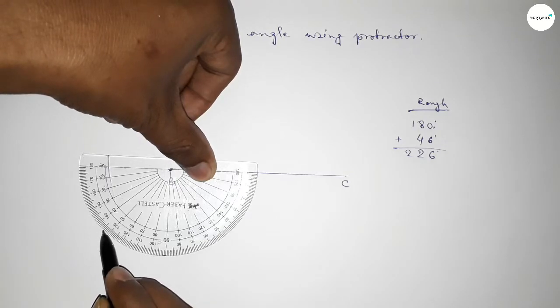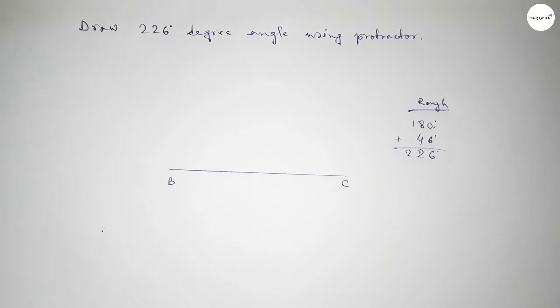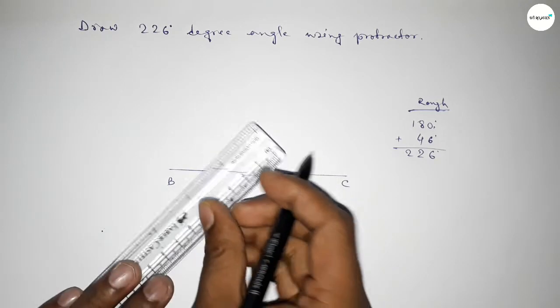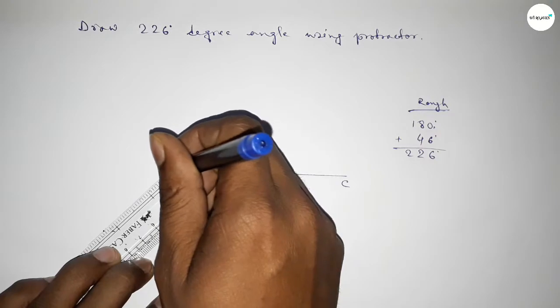So by adding 46 degree angle with 180 degree, then we can get 226 degree angle.